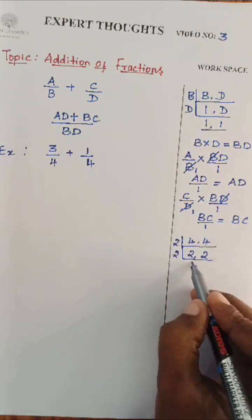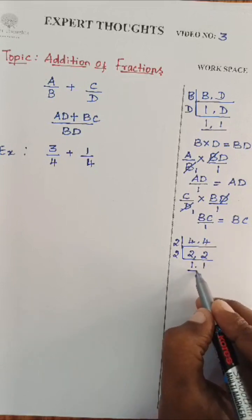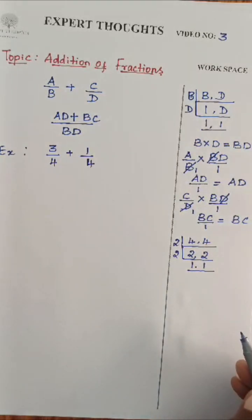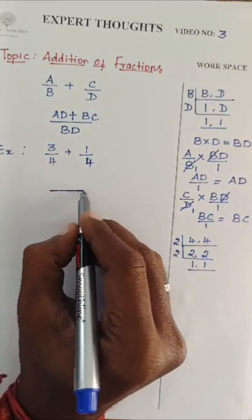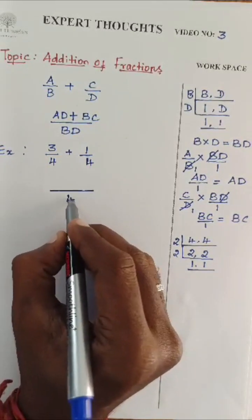Once again, 2 I will take. 2 ones are 2, 2 ones are 2. The LCM will be 2 into 2, which is nothing but 4. I will write the single term as 4.